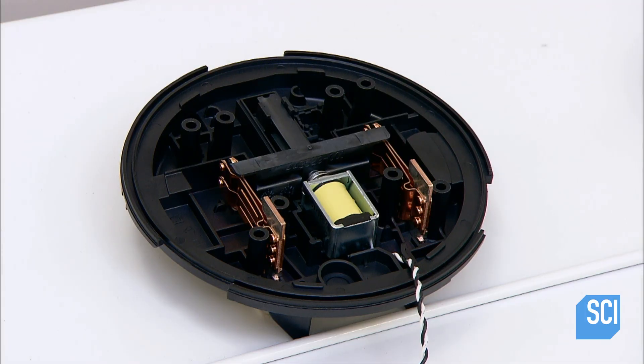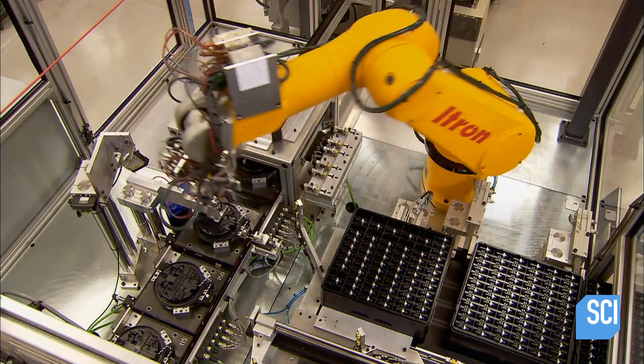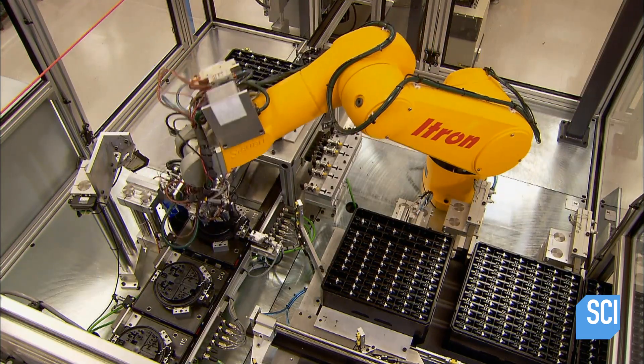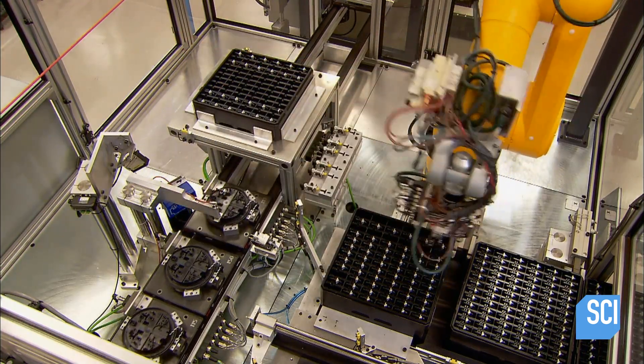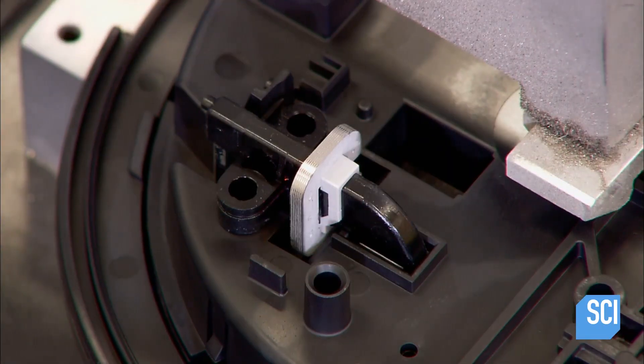A switch cover closes up the base. The protruding wire will connect to a circuit board. The next station installs two terminals through the switch cover. These function as part of the switch operation as well as part of the meter's measurement of electricity consumed.